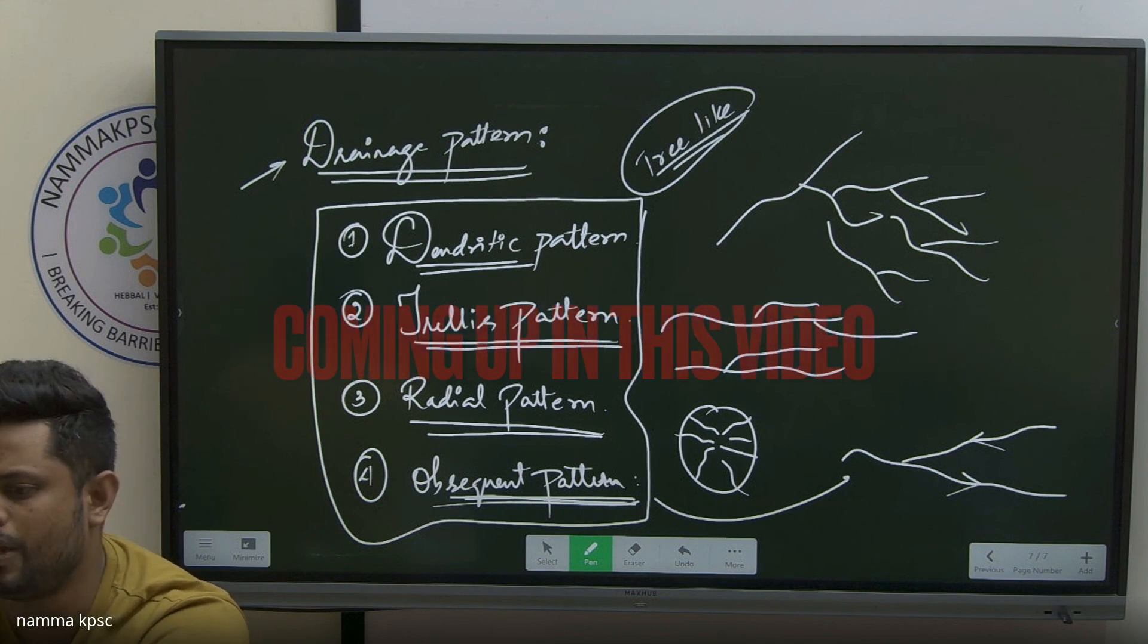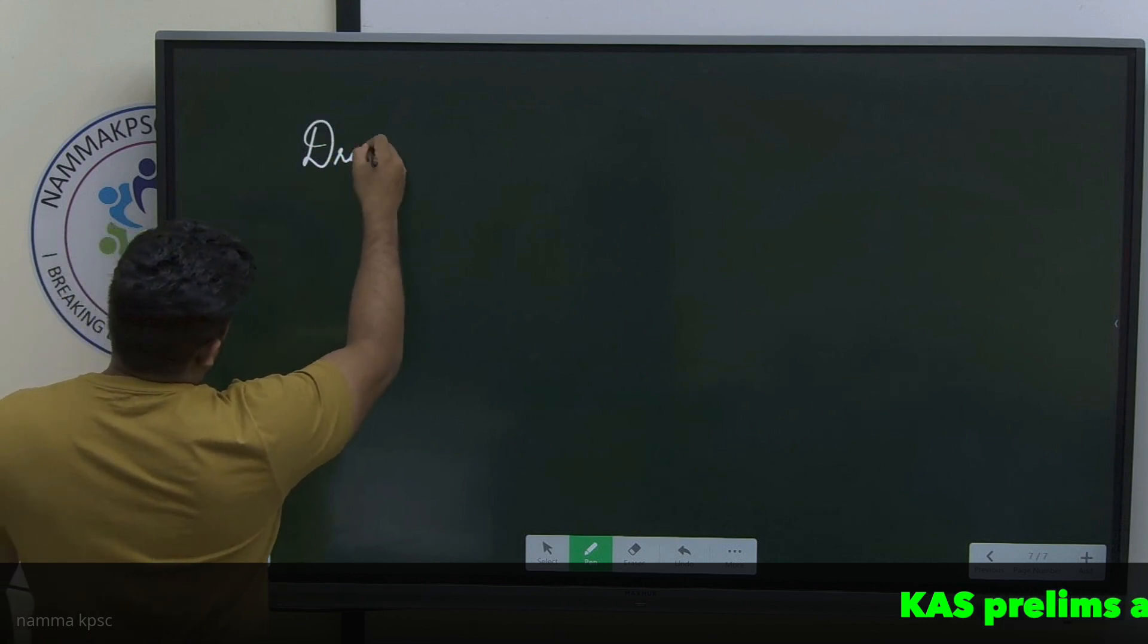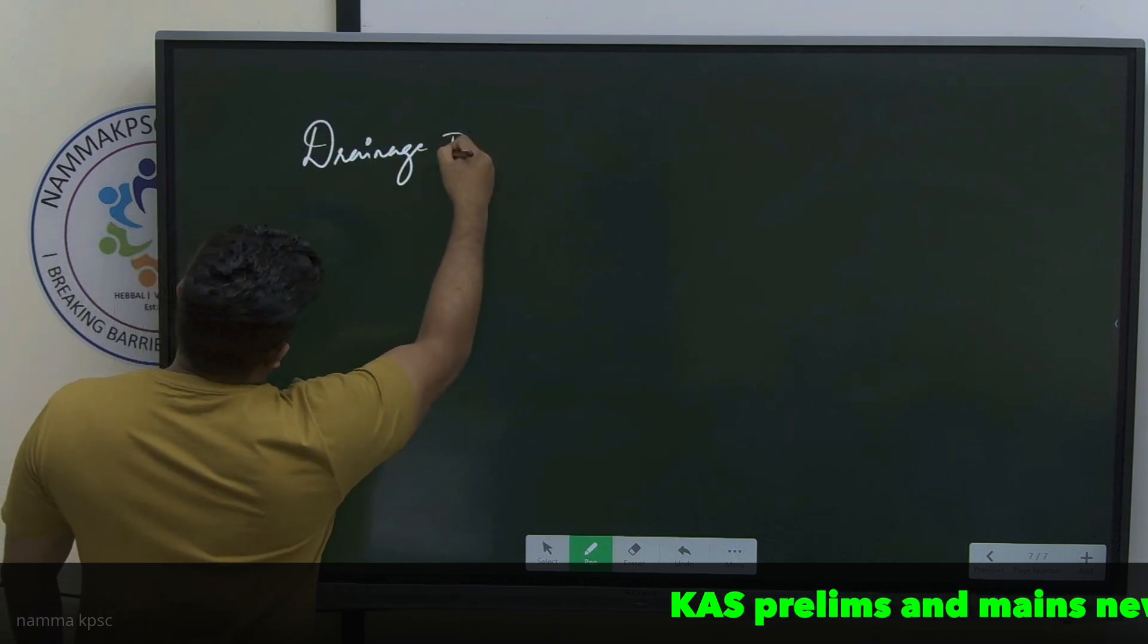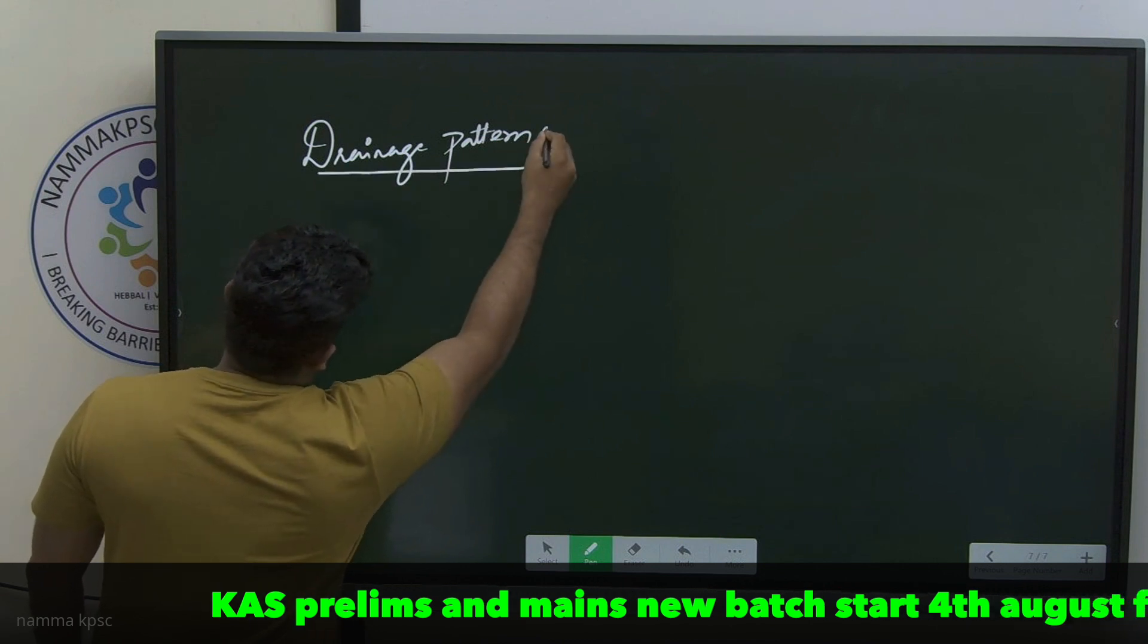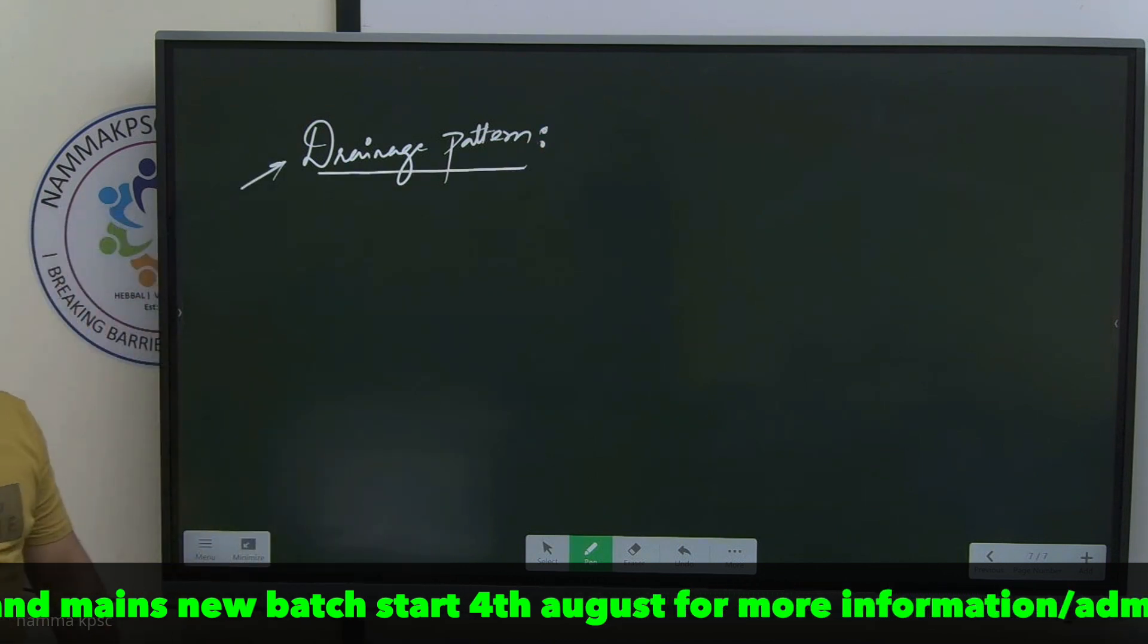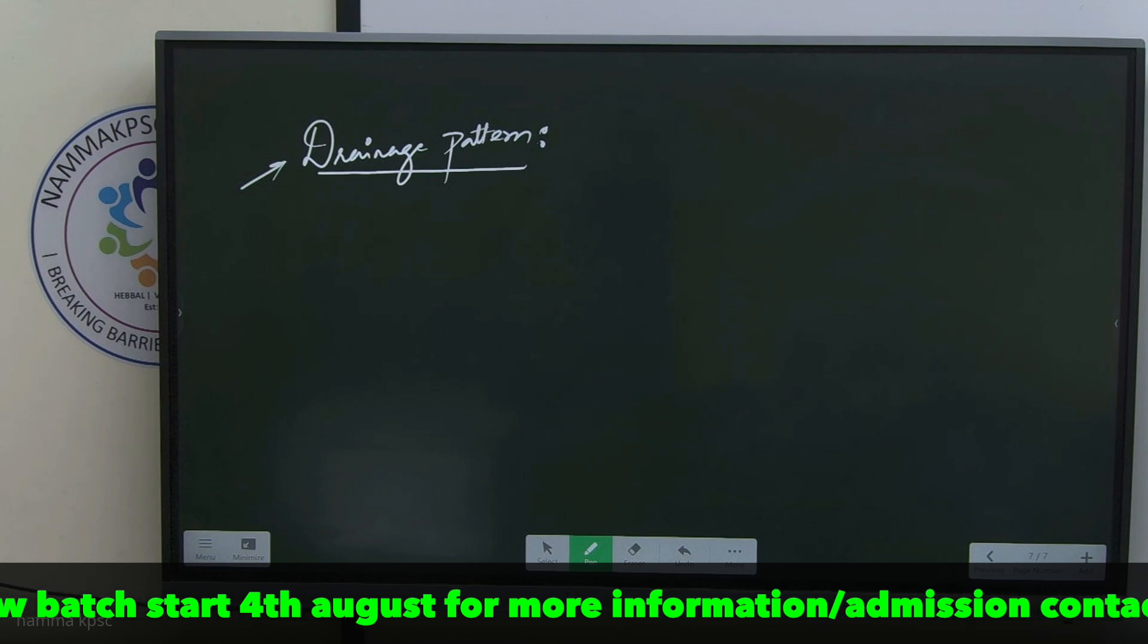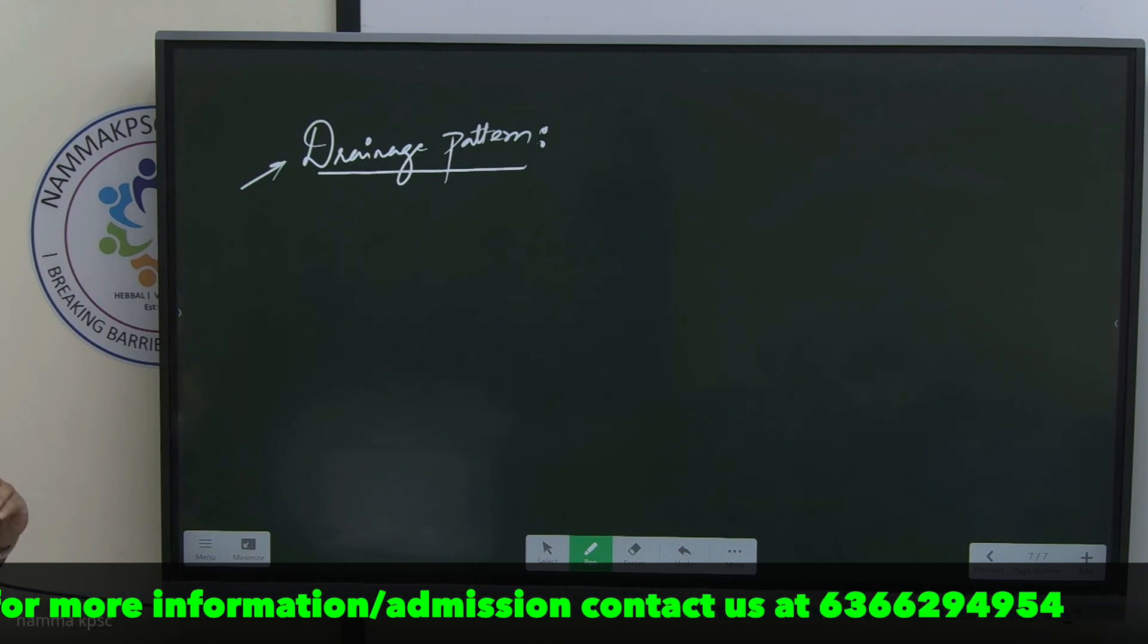First of all, what is this drainage pattern? The drainage pattern is pretty much giving us an idea about the manner in which a surface discharge is happening, usually associated with a pattern, a shape or whatever.